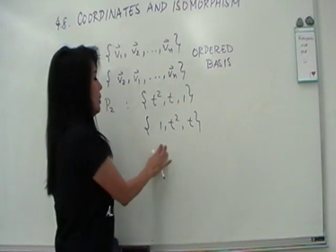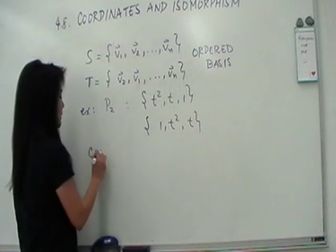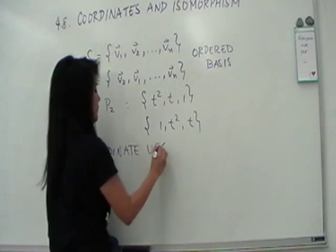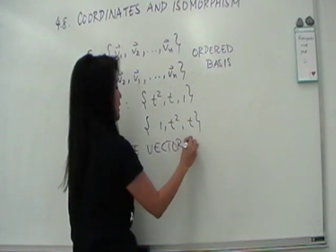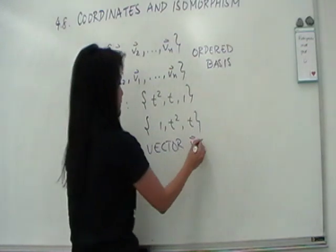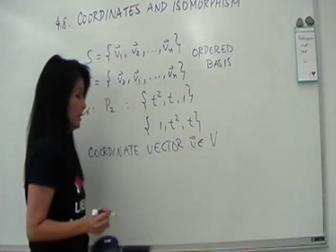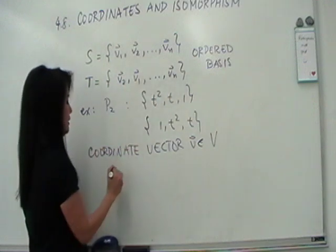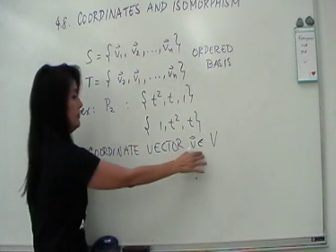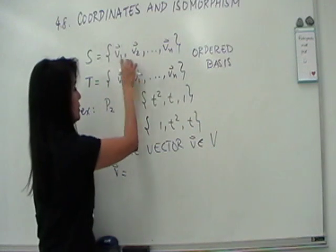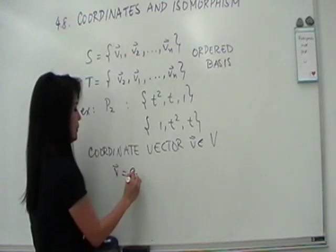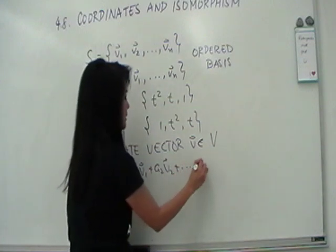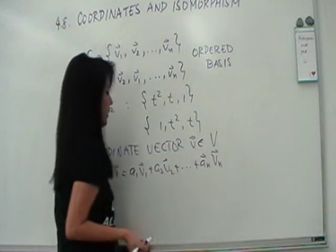So what happens is we're going to define what we mean by the coordinate vector of a vector V in the vector space V. So if we have, if let's say this is an ordered basis for V, then we know that any vector in V can be written as a linear combination of this. So let's say we have a1, V1, plus a2, V2, plus and so on, plus a sub n, V sub n.